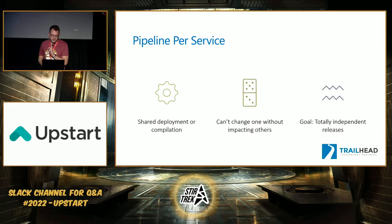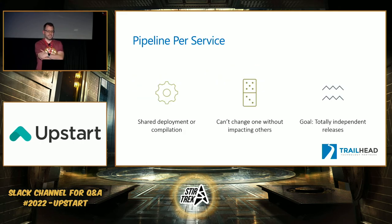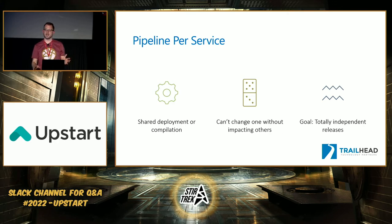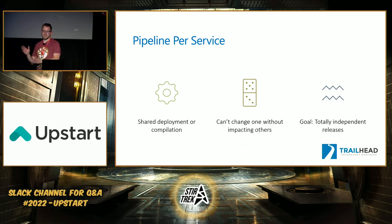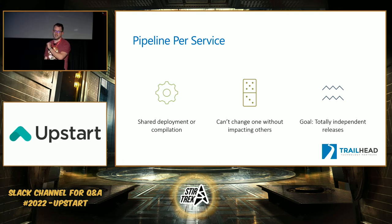Problem twelve also relates to pipeline per service. When doing CI/CD for microservices, you might be used to having one pipeline per environment for a monolith. You want completely separate builds and completely separate release pipelines for each service. If you start to share pipelines between services, you've started coupling them together — one team can't release because another service is already using the pipeline. If all the services have to be built at the same time, that's really a monolith by definition. You want to compile, deploy, and manage each service completely separately with completely separate pipelines.